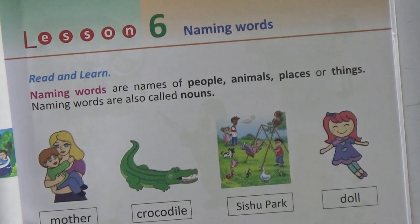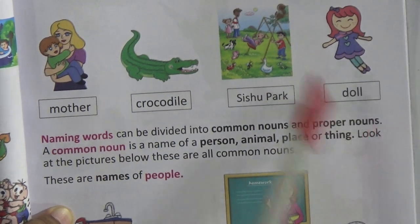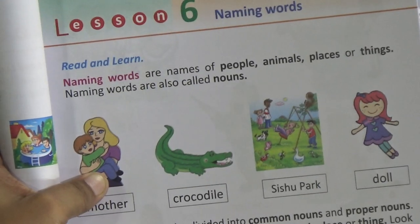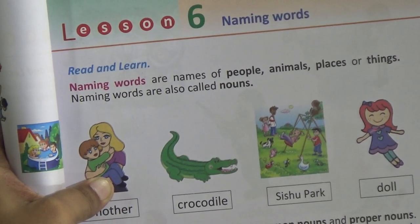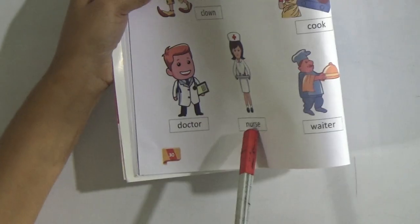Just look here students — mother, crocodile, she, super, doll — all these are actually called naming words or nouns. You have to just know about the noun, but proper noun and common noun are not necessary for you now. Plumber, teacher, farmer, police — these are some examples of nouns. Dentist, astronaut, soldier, clown, cook, doctor, nurse, waiter.